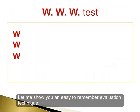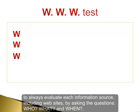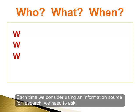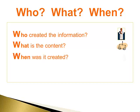Let me show you an easy-to-remember evaluation technique. At our library, we teach students to use what we call the WWW test, which simply means to always evaluate each information source, including websites, by asking the questions: who, what, and when. Each time we consider using an information source for research, we need to ask: Who created the information? What is the content? And when was it created?